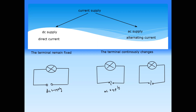For DC supply, the terminals remain fixed — for example, if the left-hand side is positive and the right-hand side is negative, it remains fixed. So if the terminals remain fixed, the direction of the current will be constant. Conventional current always moves from positive to negative.